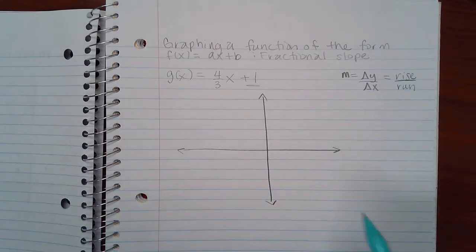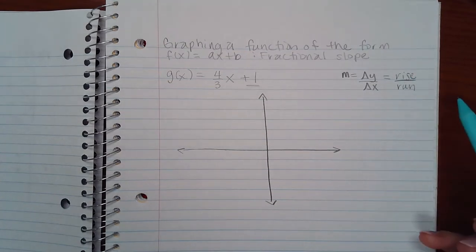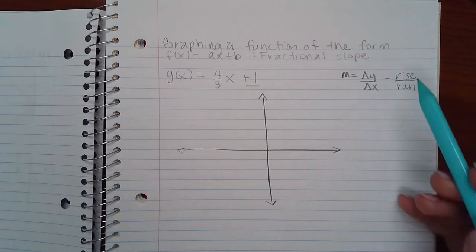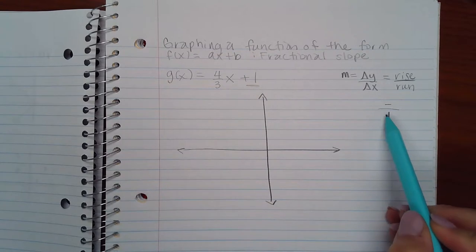Now I always tell people that if your slope is positive, then both numbers can be positive. If your slope is negative, always choose to make the top negative and the bottom positive.